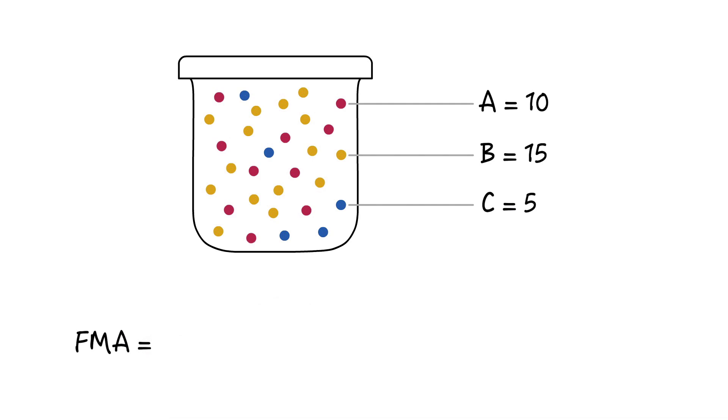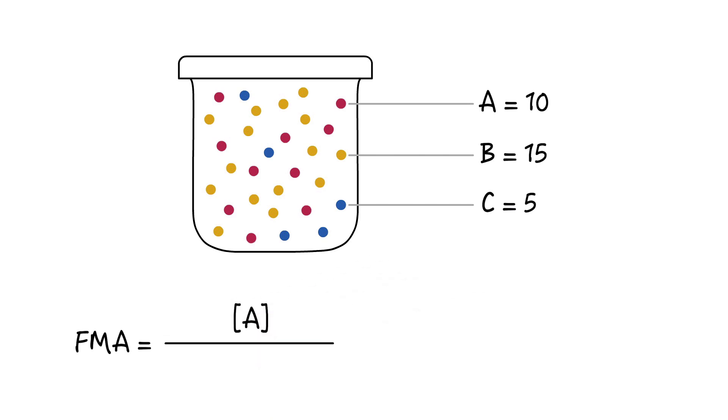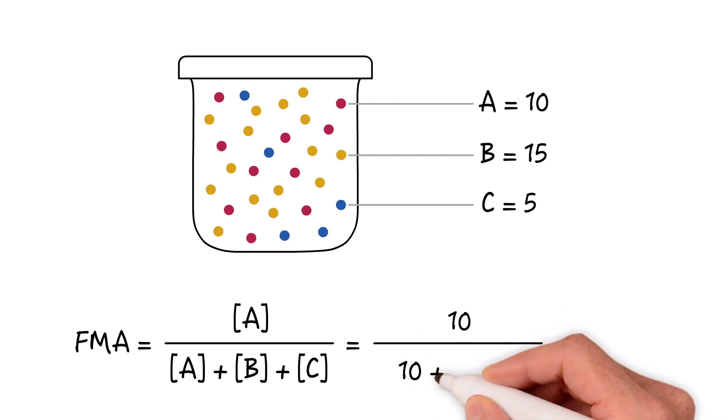The fractional concentration of gas A can be calculated by the number of molecules of gas A divided by the total number of all gas molecules in the mixture, that is the amount of gas A plus the amount of gas B plus the amount of gas C. For our mixture here, we would have 10 divided by 10 plus 15 plus 5 or 0.33. So the fractional concentration of gas A in this mixture is 0.33.